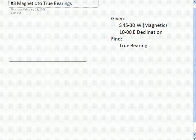This is a situation where we're given a magnetic bearing and the declination, and what we want to find is the true bearing.